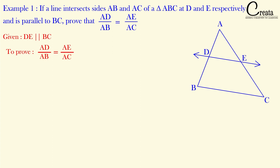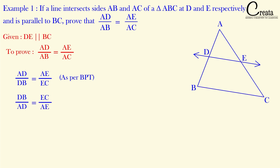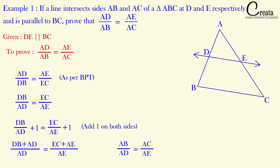Let's see how we can relate both concepts. It is given that DE and BC are parallel to each other, so we can apply the BPT theorem: the ratio AD upon DB will be equal to AE upon EC. Further, we can rewrite this as DB upon AD is equal to EC upon AE — we have just taken the inverse of the BPT theorem equation. Now let's add one to both sides of the equation. We get AB upon AD is equal to AC upon AE, which we can rewrite as AD upon AB is equal to AE upon AC. That is the proof we were looking for — the answer to this question.